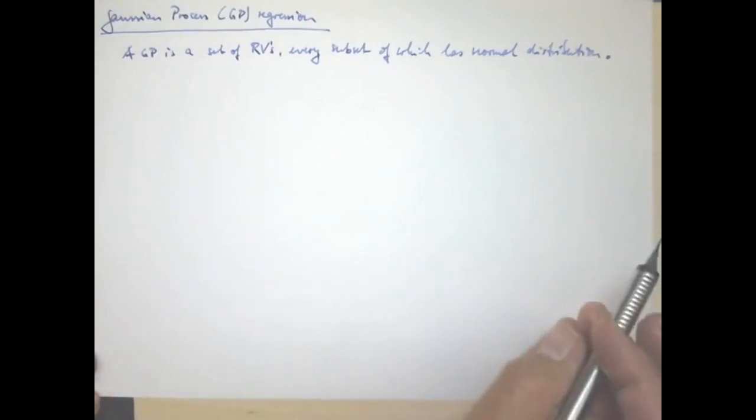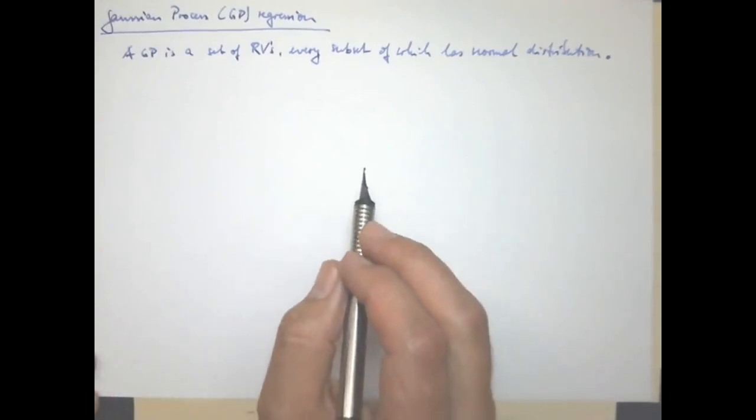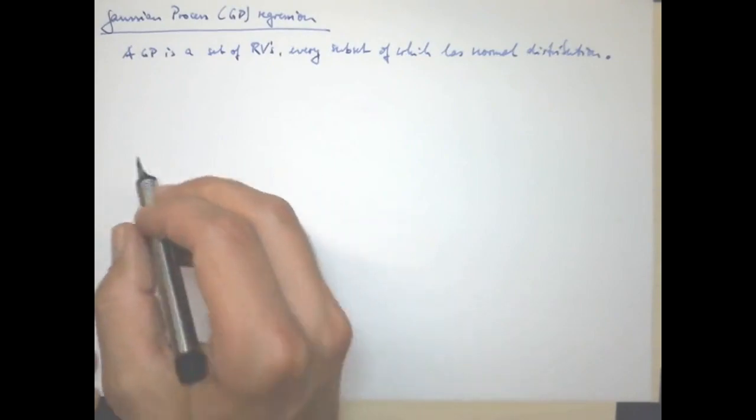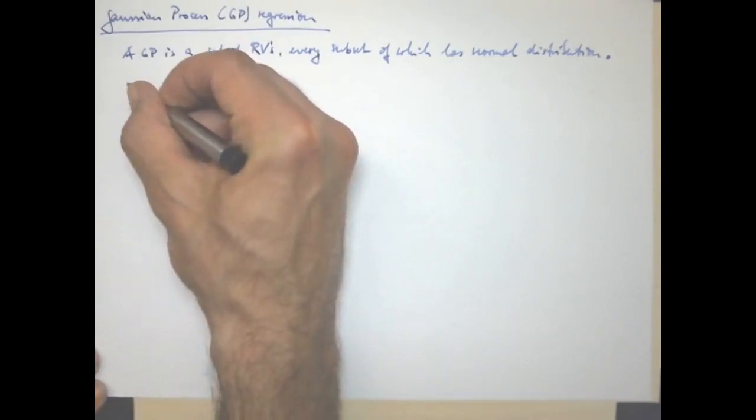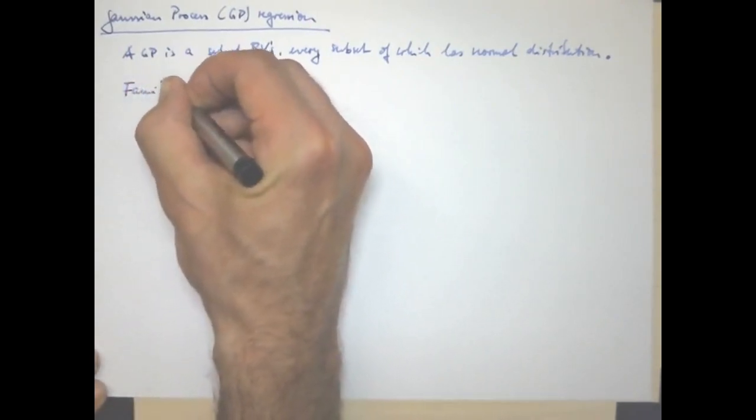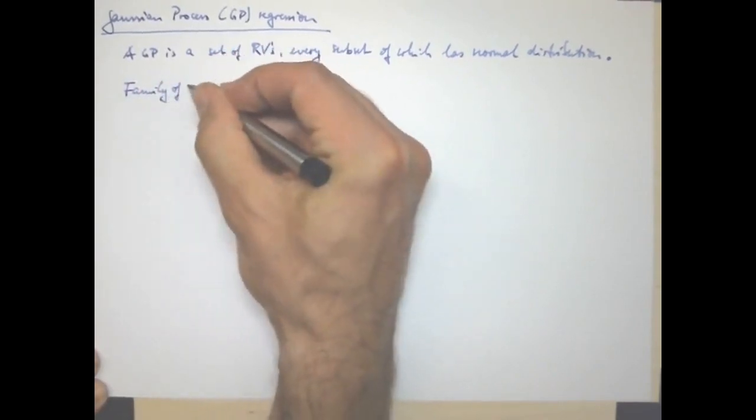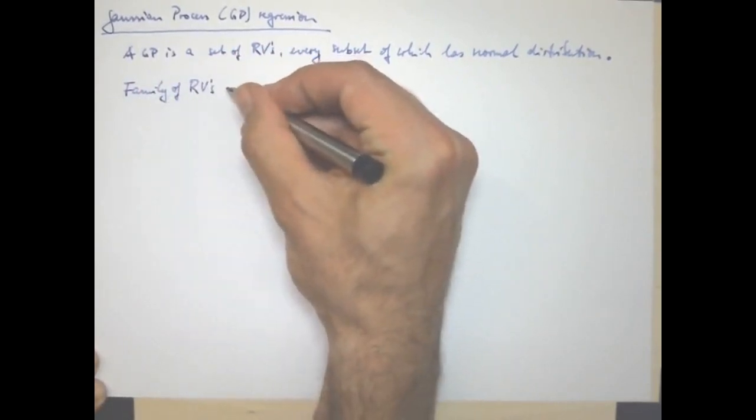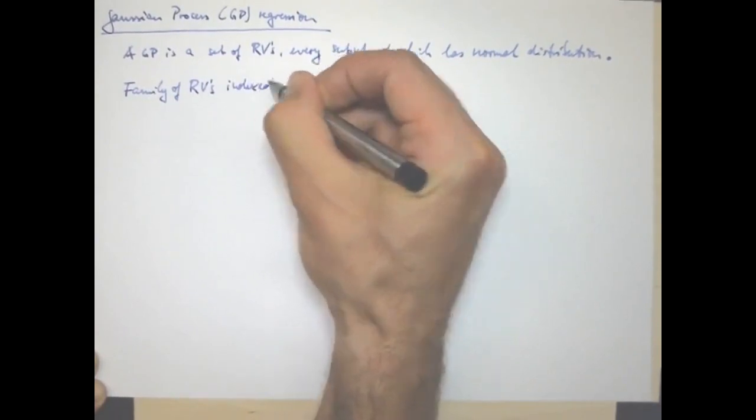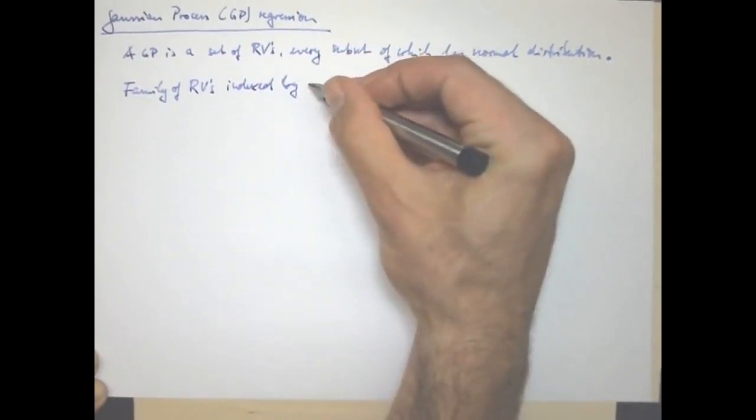So this is what the Gaussian process is in general. Now, in our case, more particularly, we consider a family of random variables that are indexed by their spatial position.